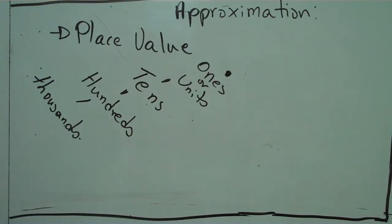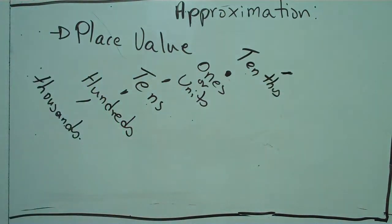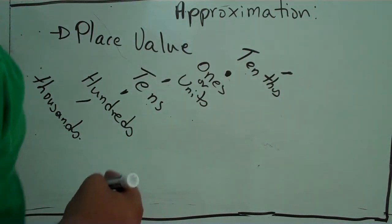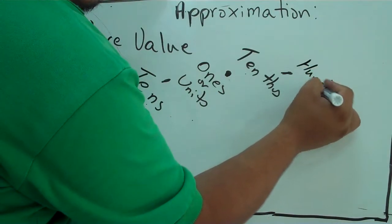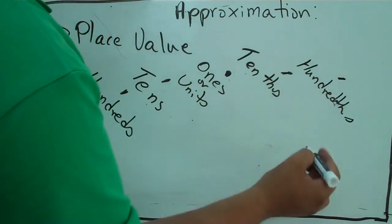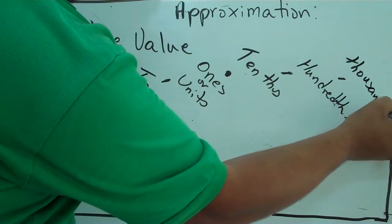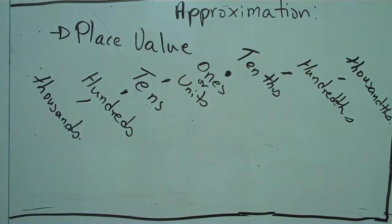To the right side of the decimal, we do not start with ones or units — we start off with tenths, then hundredths, then thousandths, and so on. Notice that on the left side all the place values end with 'S', and on the right side all of them end with 'THS' — tenths, hundredths, thousandths — and so on.